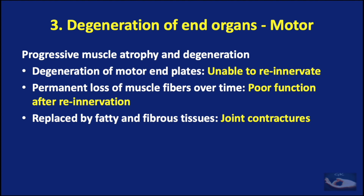In the motor end organs, progressive muscle atrophy and degeneration occurs. When there is degeneration of the motor end plates, they will be unable to re-innervate. Permanent loss of muscle fibers over time leads to poor function after re-innervation. When the muscle itself is replaced by fatty and fibrous tissues, it may result in joint contractures.